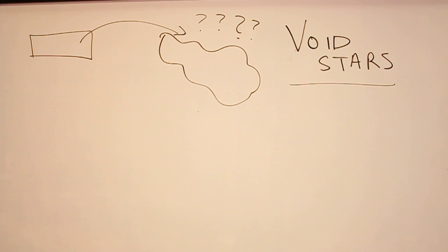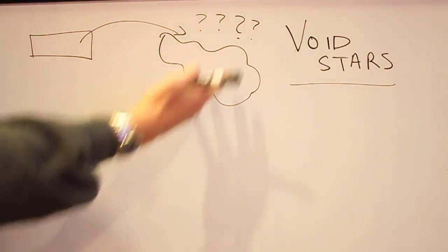Now, a void star is just a pointer to a blob of memory somewhere out in the heap. So, here's a little diagram. You can see it's pointing, and we have no idea what it is.